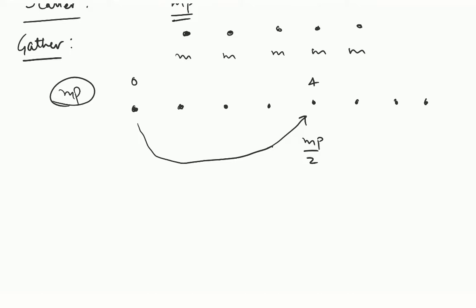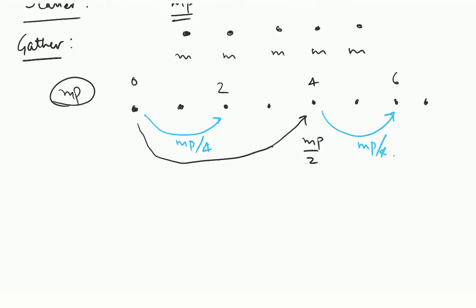What is going to happen in the next iteration? In the next iteration, 0 is going to send to 2 and 4 is going to send to 6. How much data is 0 going to send to 2? It is going to send data of size mp by 4, and node 4 is also going to send data of size mp by 4.